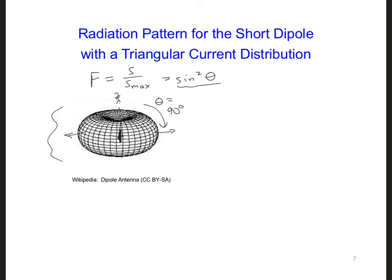When you have to draw a radiation pattern on paper, it's easier to create two-dimensional slices of the radiation pattern. Typically, we'll see two slices.